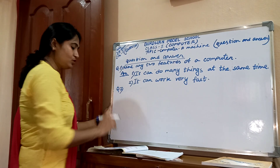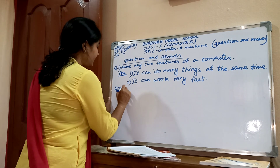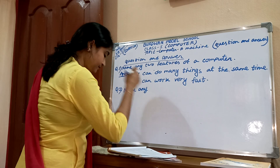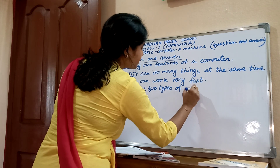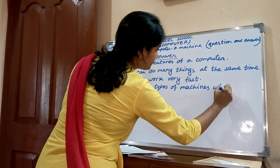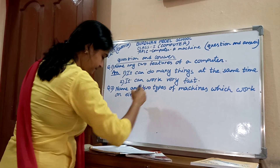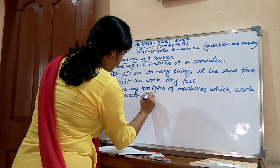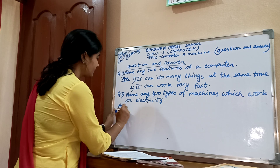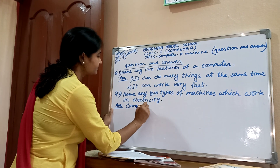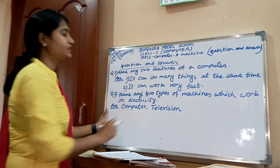Question number 2: Name any two types of machines which work on electricity. Which machines work on electricity? You all know — write down first. Answer: Computer. And many machines are there. Write: Television — T-E-L-E-V-I-S-I-O-N. Computer and television.